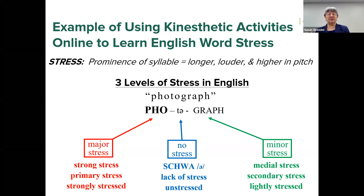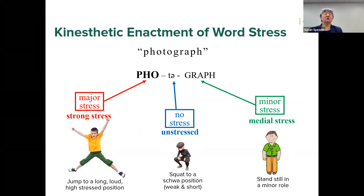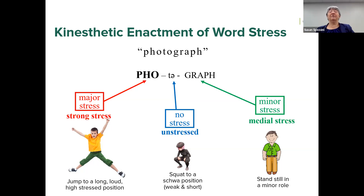Because a Spanish speaker coming to English must learn three levels of stress, and because stress can be difficult to perceive when coming from a language without three levels, we use kinesthetic enactment of word stress. By doing this, learners can feel the stress throughout their body and act it out, giving them a better chance of hearing the different stress levels and pronouncing them. For major stress — the first syllable of 'photograph' — we use a jumping jack type of movement, reaching up to show high pitch.